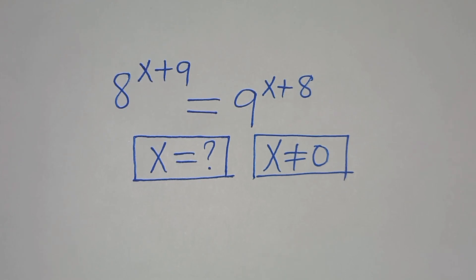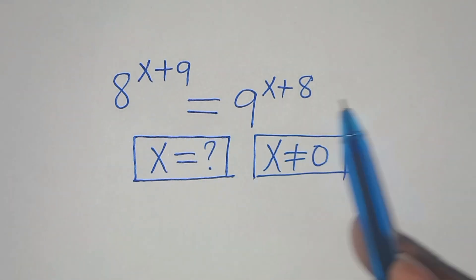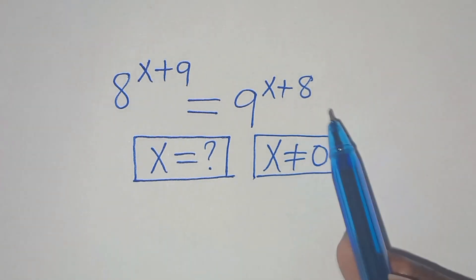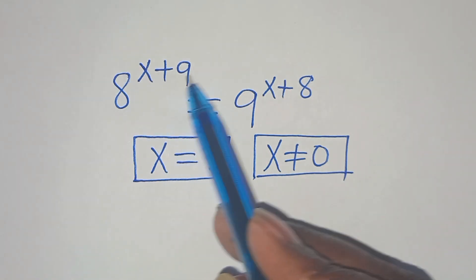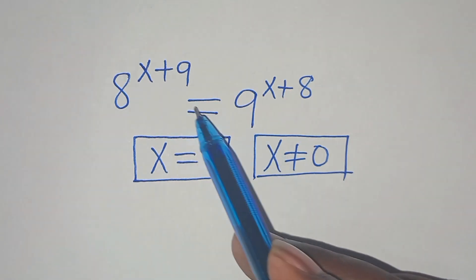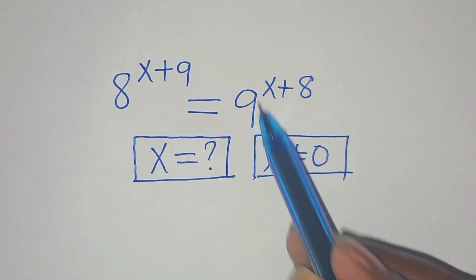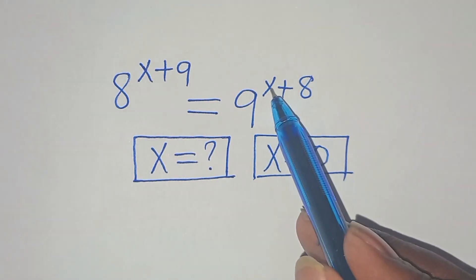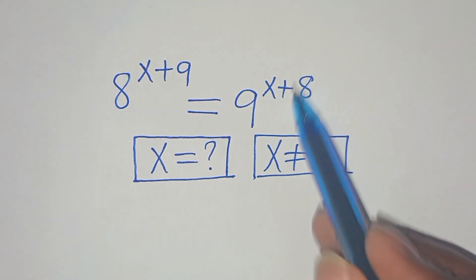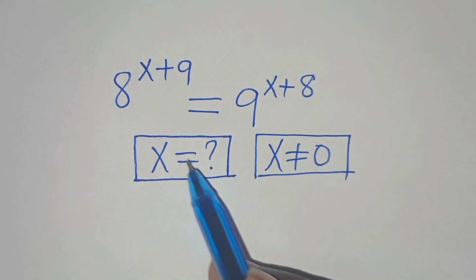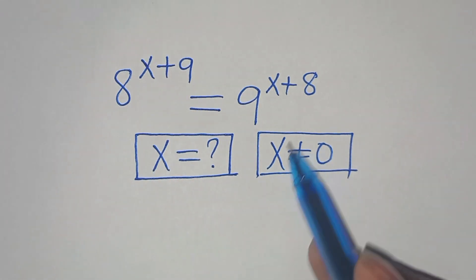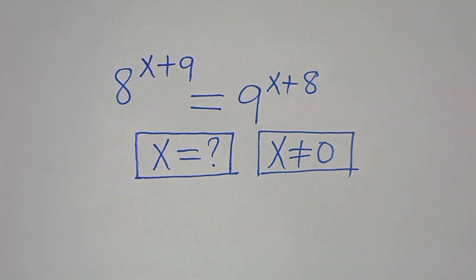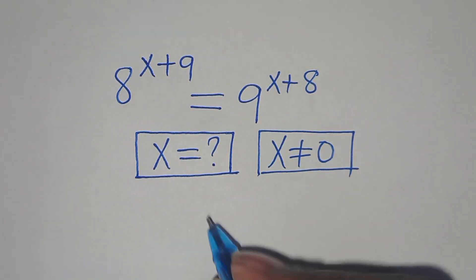Hello everyone, welcome to solve this nice exponential equation: a to the power of x plus 9 equals 9 to the power of x plus 8. What is the value of x, given that x is not equal to 0?